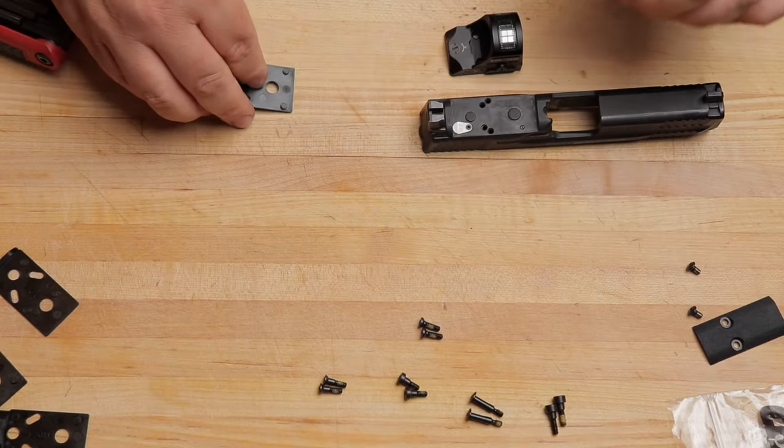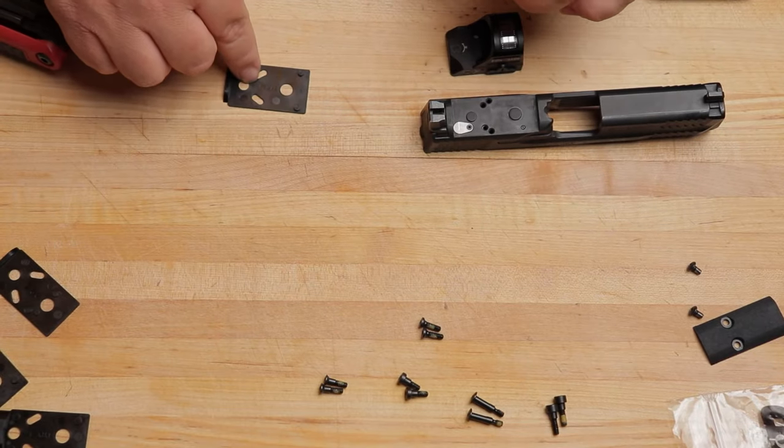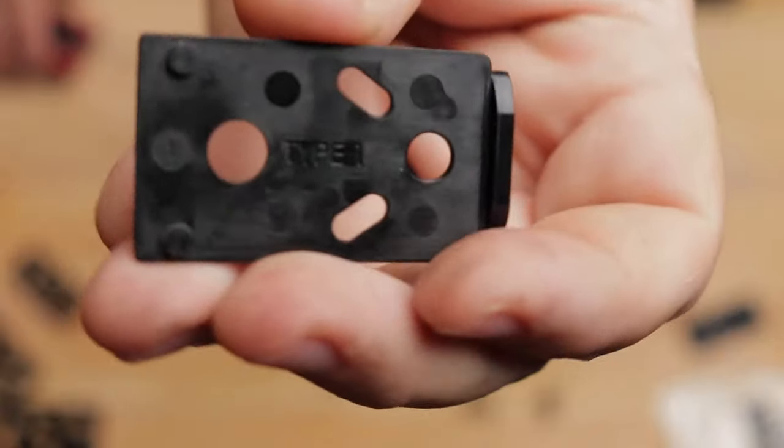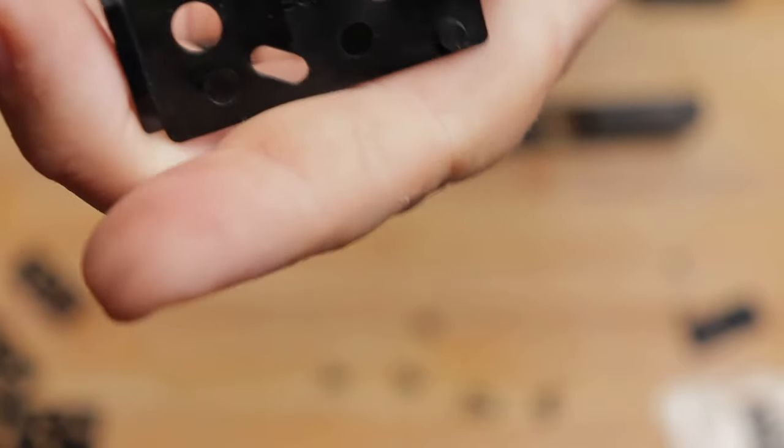So, now that we've found our plate, make note of the type name that is on here. This guy is type one. Remember that. It's gonna be important here in a moment.